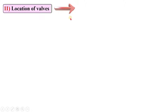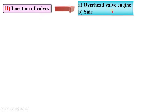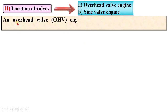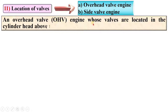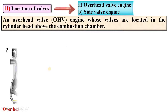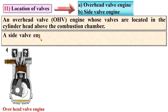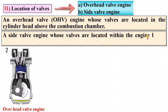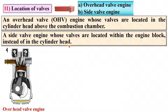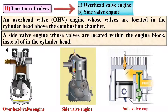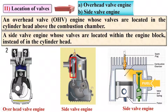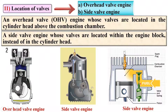According to the location of valves, IC engines are classified as overhead valve (OHV) engines and side valve engines. In an OHV engine, the valves are located in the cylinder head above the combustion chamber, as shown in the figure. In a side valve engine, the valves are located within the engine block instead of in the cylinder head — the valves are positioned at the side of the engine cylinder.